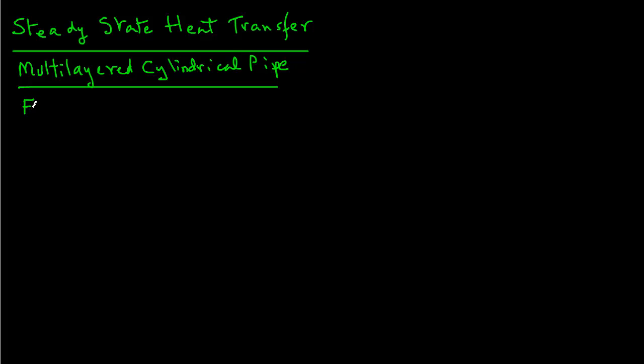So we will first recall that for a single layer pipe, the rate of heat transfer QR was equal to 2πLk(Ti - To) divided by natural log of Ro over Ri. This is what we obtained in the previous module.